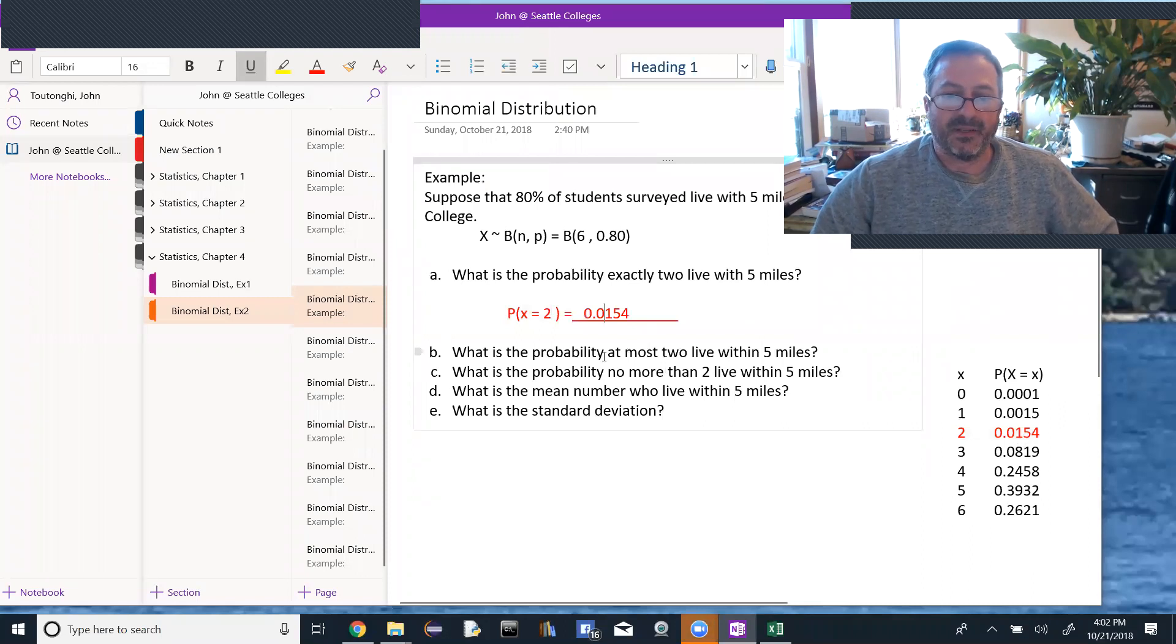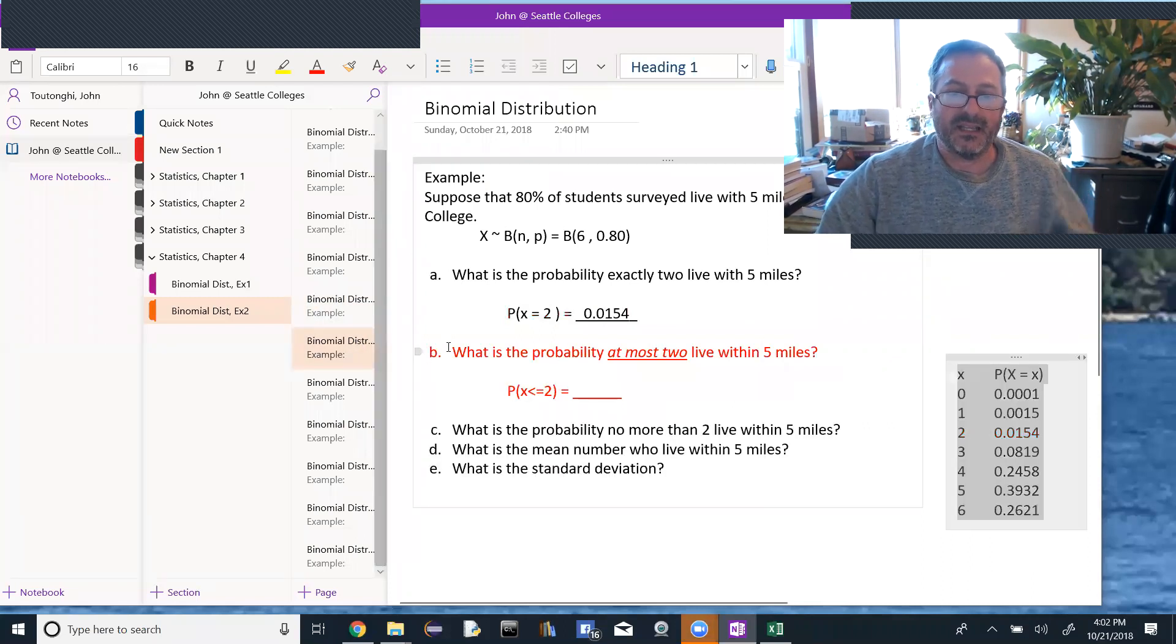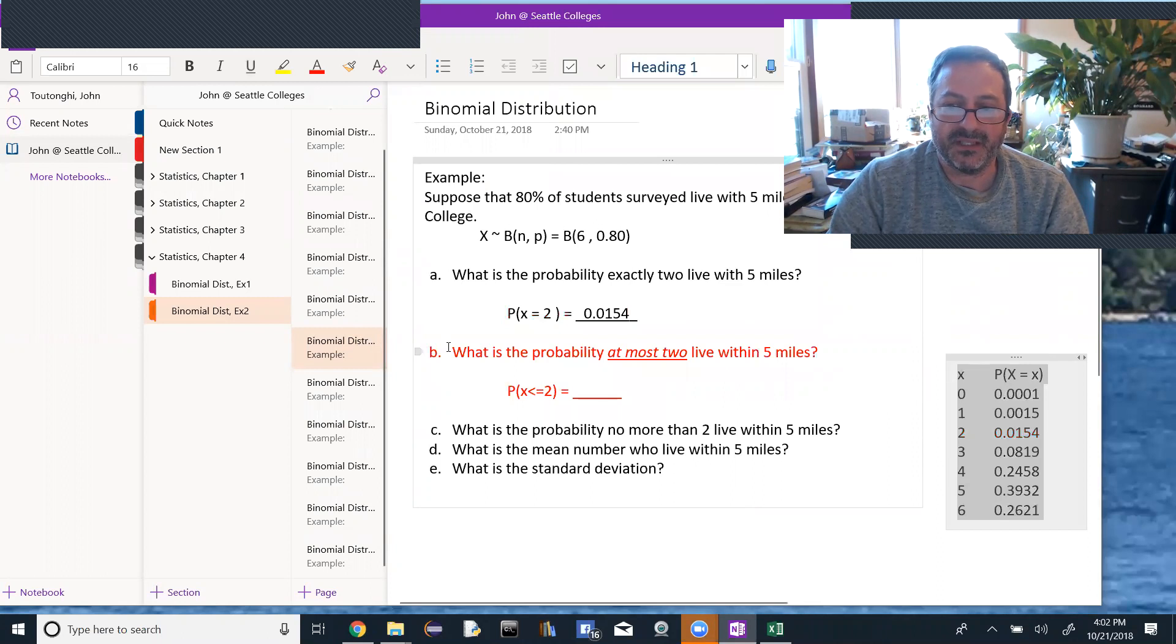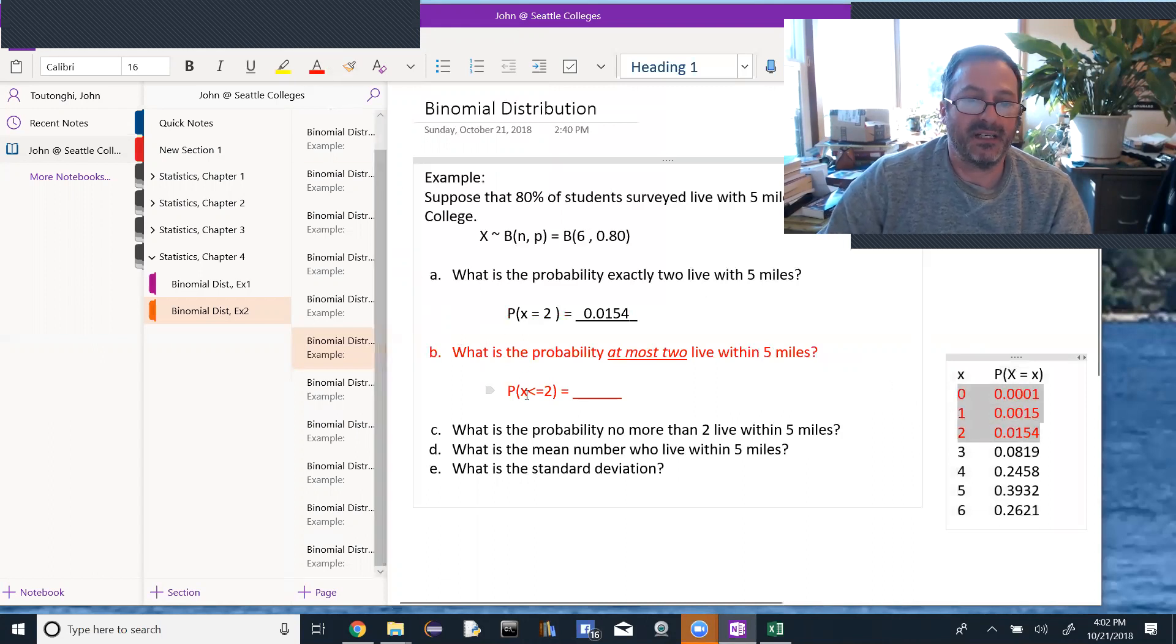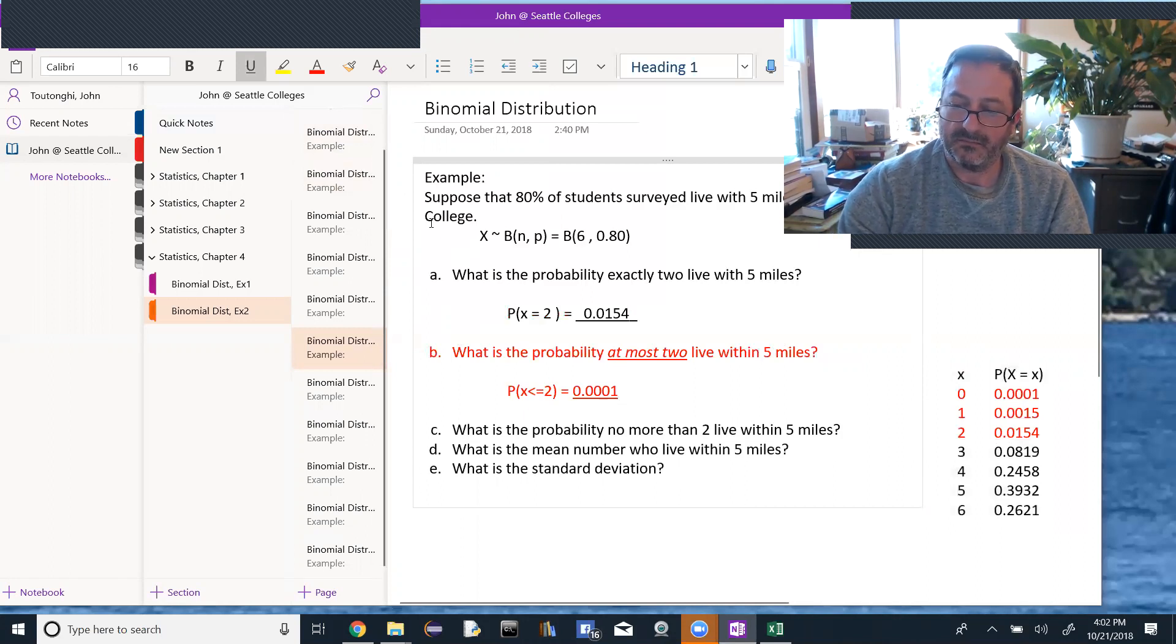Part B says, what is the probability that at most two live within five miles? And in that problem, what we're really asking is, what do I mean by at most? At most two means up to and including two, so 0, 1, or 2. Or if you're thinking about an inequality, that's the probability that X is less than or equal to 2, and I can add those three probabilities, 0.0001 plus 0.0015 plus 0.0154.